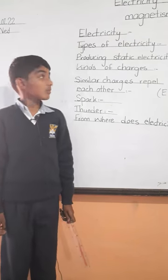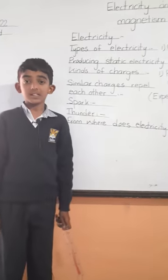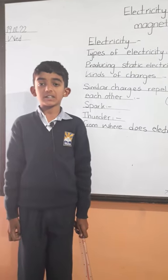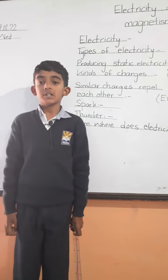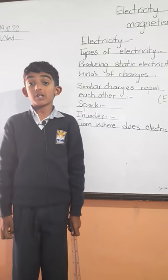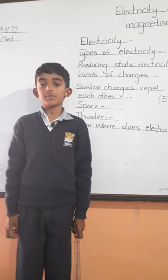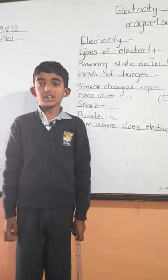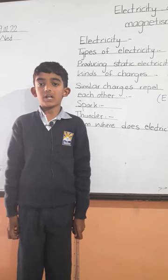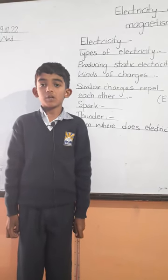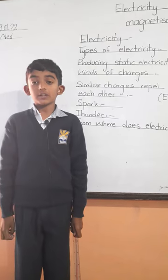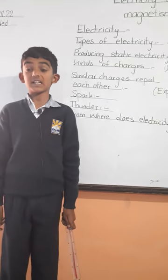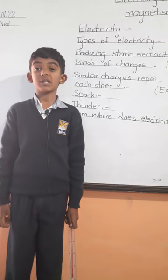Now I will tell you about producing static electricity. We can produce static electricity on some materials by rubbing. Rub a plastic comb in our hair, then bring this comb near pieces of cotton cloth. We see the pieces jump toward the plastic comb and cling to it. It is because static electricity is produced by rubbing.